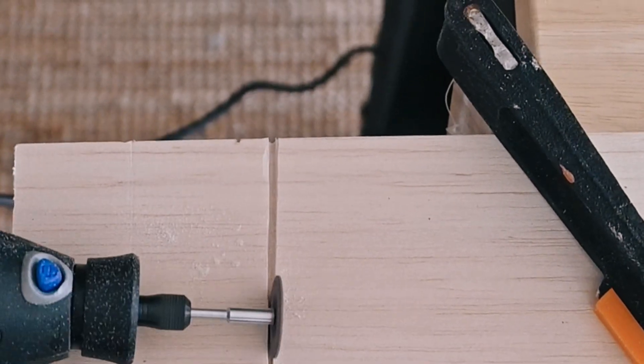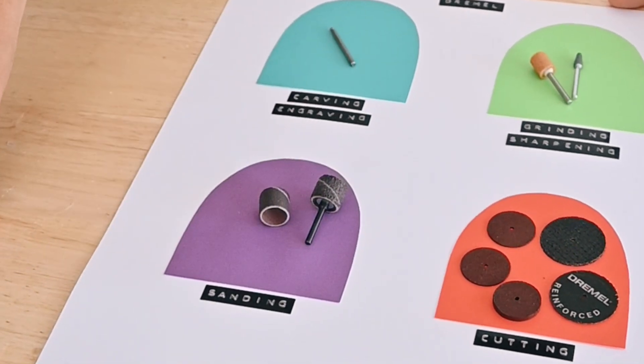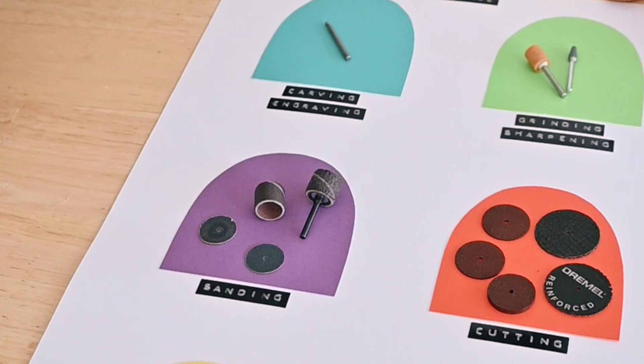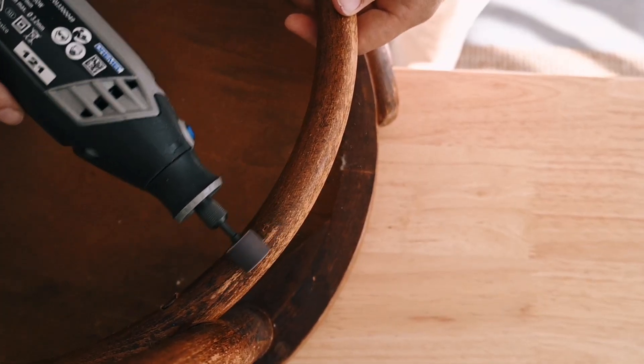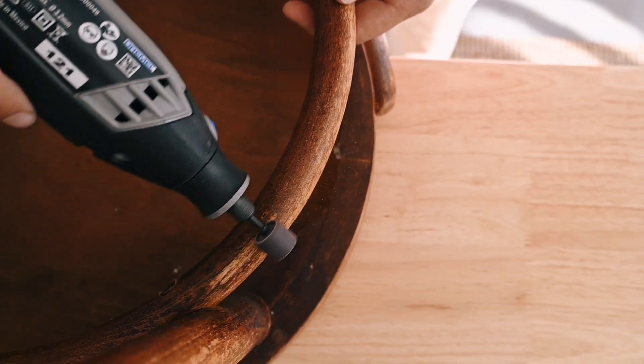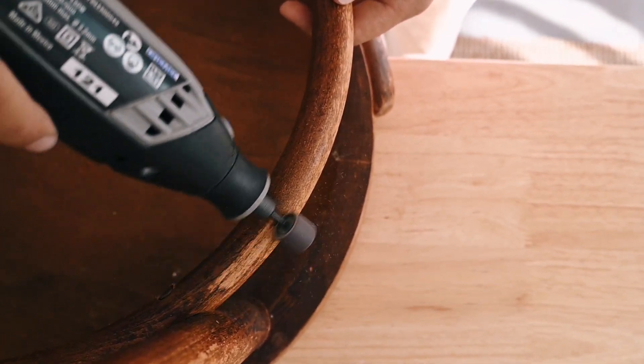Next up, sanding. I love using my Dremel for small and large sanding projects, and the various sanding discs and sanding bands make all different types of projects possible.